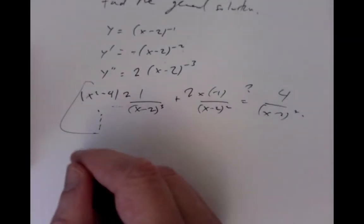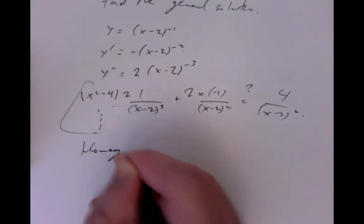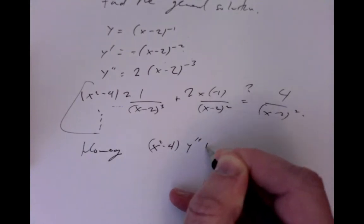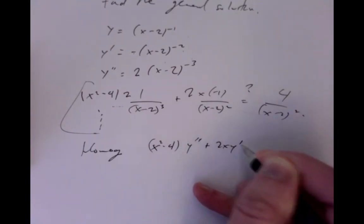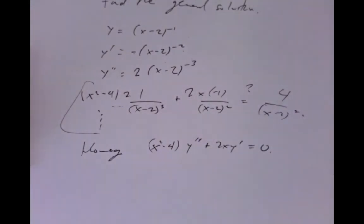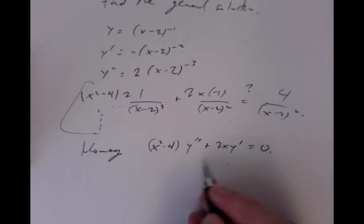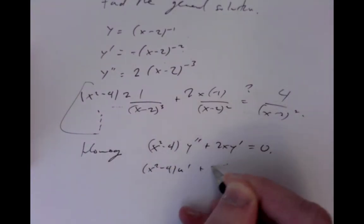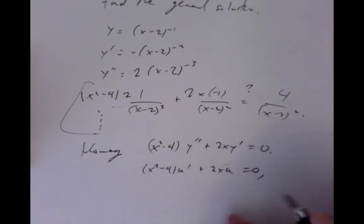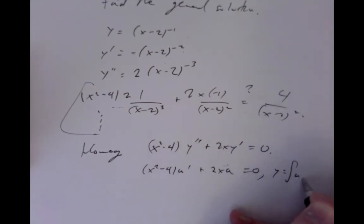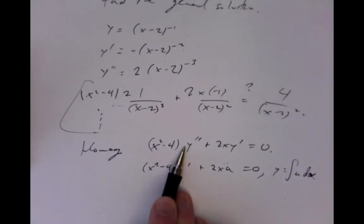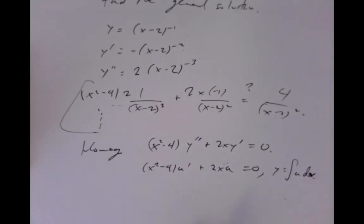The associated homogeneous problem is (x squared minus 4) y double prime plus 2x y prime equals 0. Setting u equal to y prime, so y is the integral of u dx, gives us our solution. So all we have to do is solve this problem here.